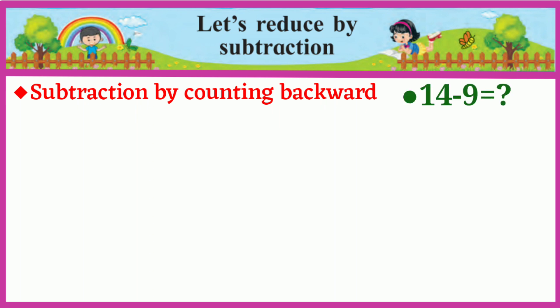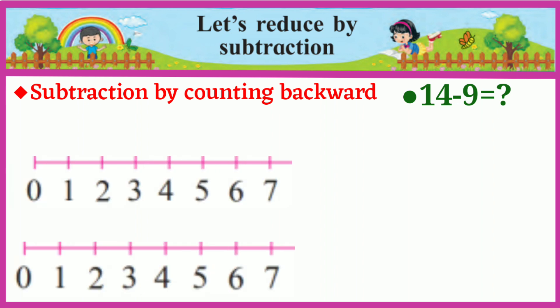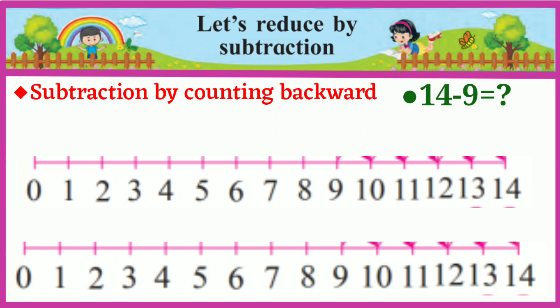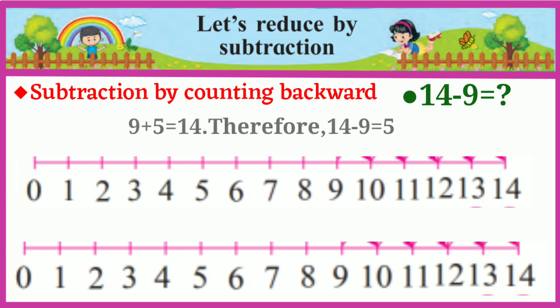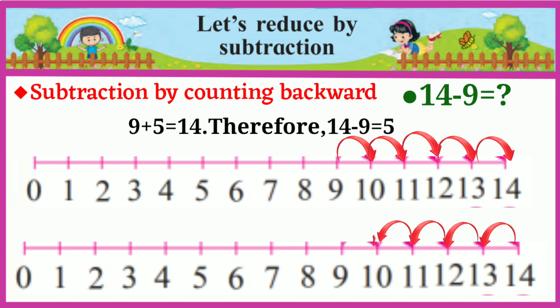Subtraction by counting backward: we can use the number line to carry out a subtraction by counting either backward or forward. Let us see the subtraction 14 minus 9. Here, 9 plus 5 is equal to 14, therefore 14 minus 9 is equal to 5.